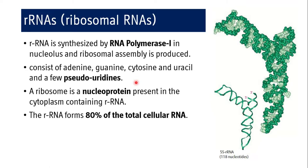A ribosome is a nucleoprotein present in the cytoplasm containing ribosomal RNA. The ribosomal RNA forms 80% of the total cellular RNA. So if you consider the total pool of RNA — including messenger RNA, ribosomal RNA, tRNA, small nuclear RNA, etc. — 80% of that total chunk is going to be ribosomal RNA only.